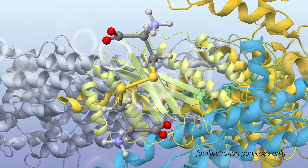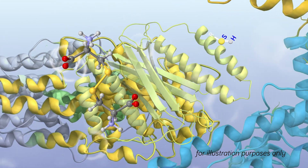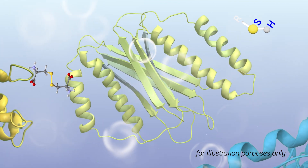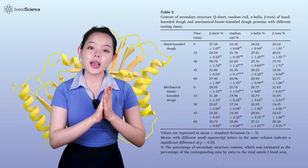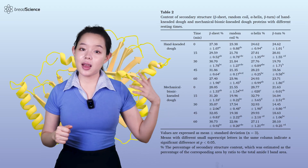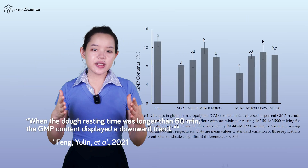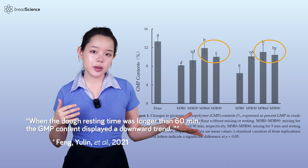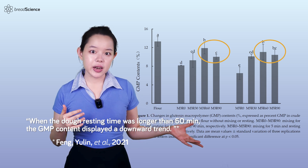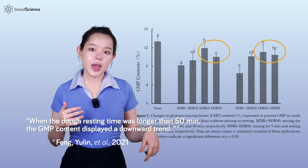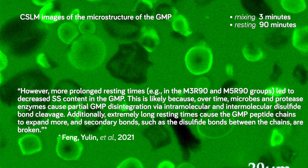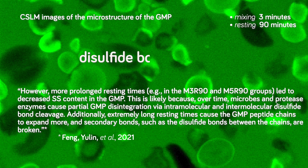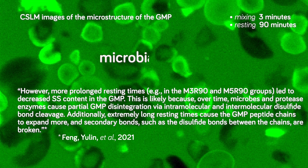As the gluten proteins absorb water and swell, they facilitate the formation of new disulfide bonds between glutenin subunits, which may lead to a greater proportion of beta sheets. The duration of the resting period can impact the beta sheet structure. Excessively long resting times may result in the breakdown of large GMP particles, potentially leading to a decrease in beta sheet content and undoing all the progress made earlier. Multiple factors can contribute to the breakdown of GMP during prolonged resting: protease activation, disulfide bond cleavage, and microbial activity.